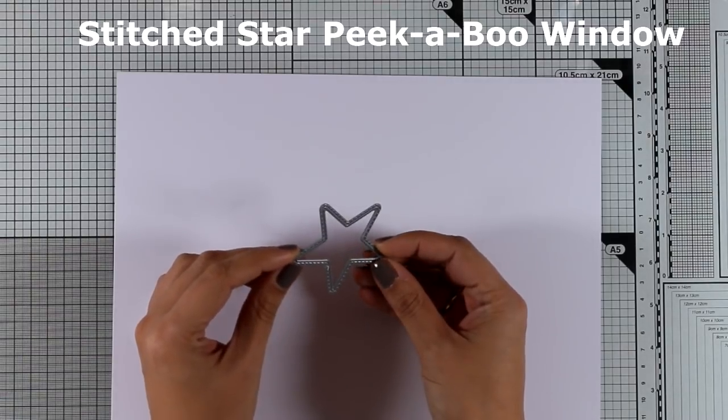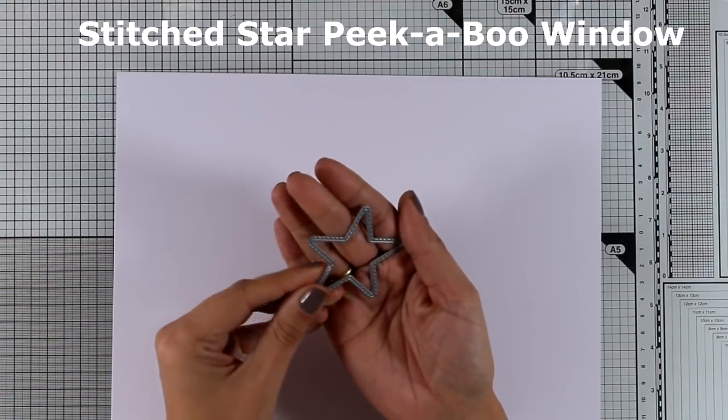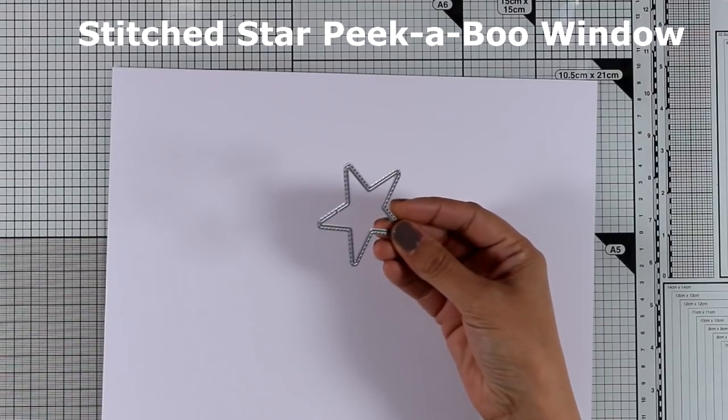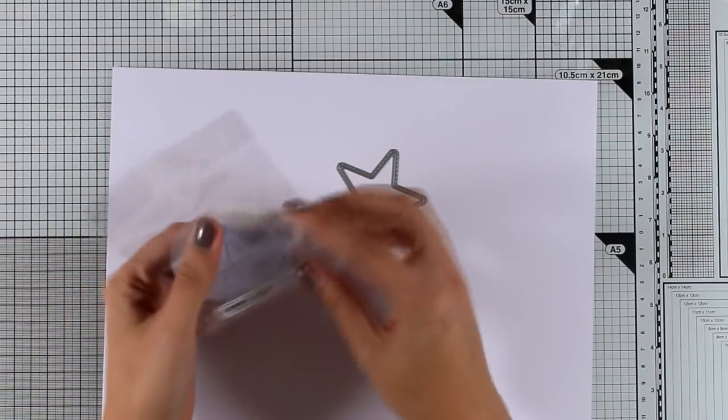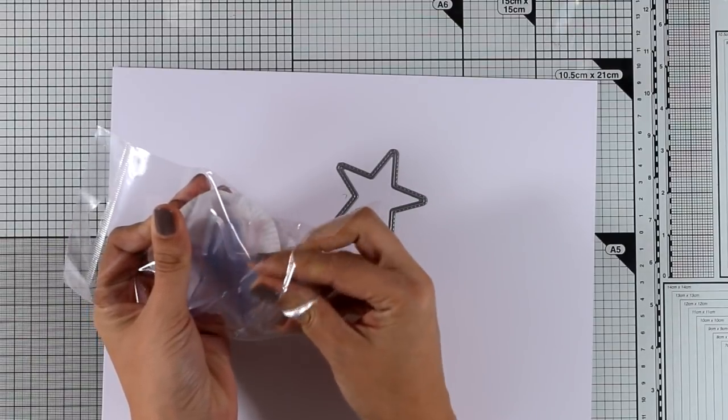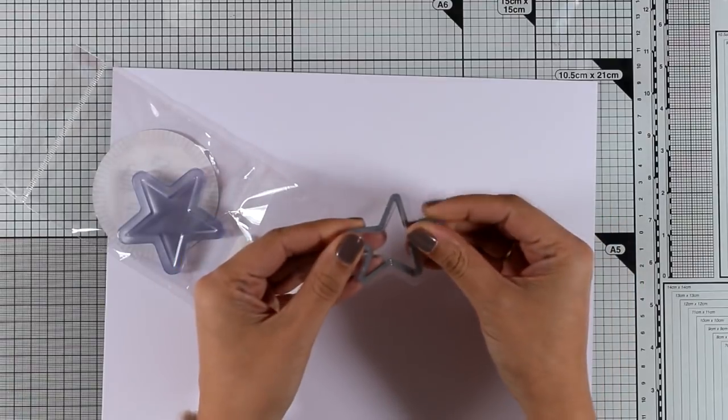And here is another free with $60 for this month. This is called Stitch Star Peekaboo Window and it has a lovely stitching just outside of the cutting line. This is one of the stars that you can use with those plastic pouches that fit perfectly inside the cutout and you can fill them in with sequins, beads or whatever you like,